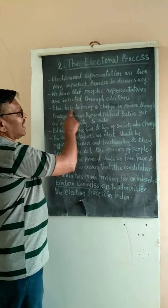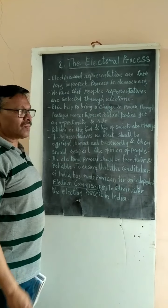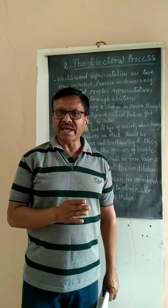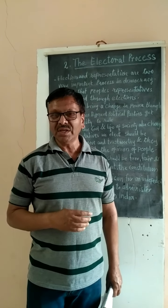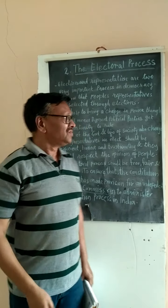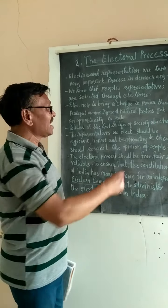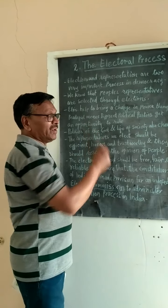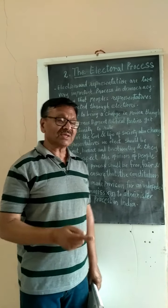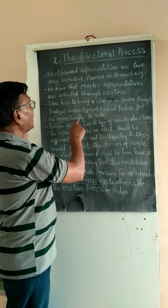Elections help to bring a change in power through peaceful means. You must remember the 2014 election — prior to that the Indian National Congress was ruling the nation for quite many years. In 2014, people wanted a change and they got a change in power through peaceful means. They cast their vote for the BJP government and the Modi government formed at the center. This was a change brought about by the people, and different political parties get an opportunity to rule.